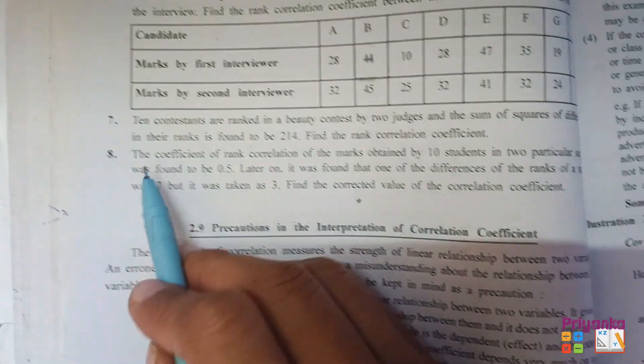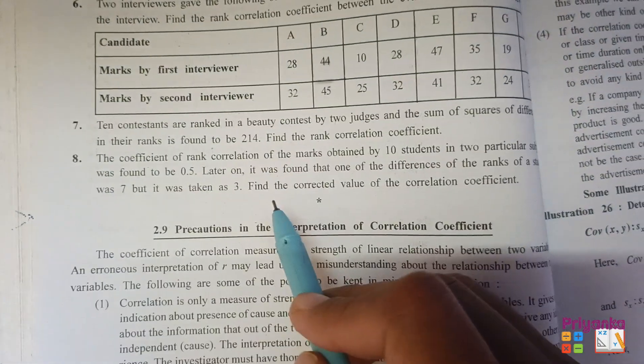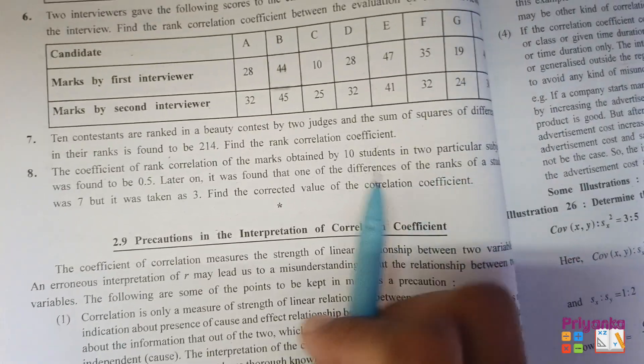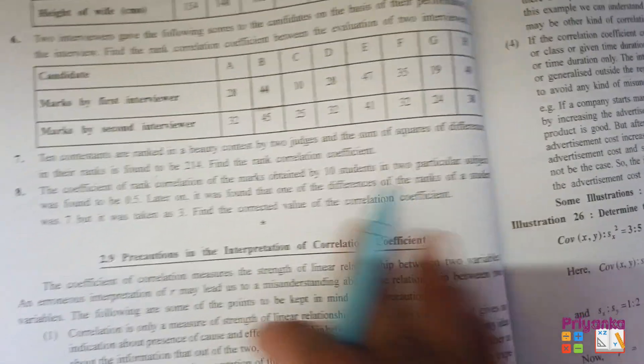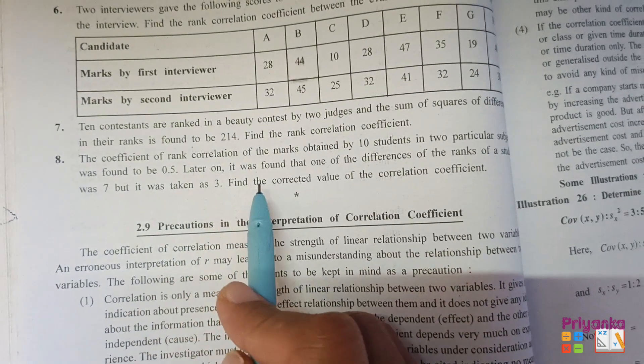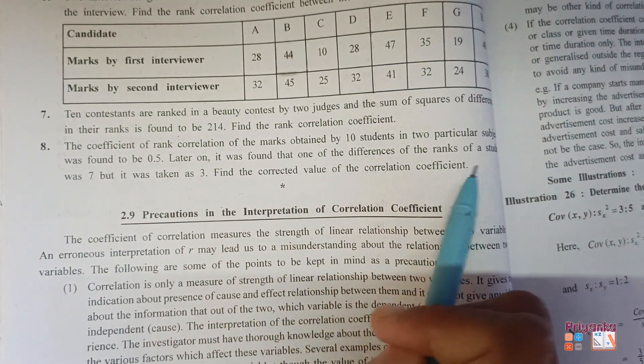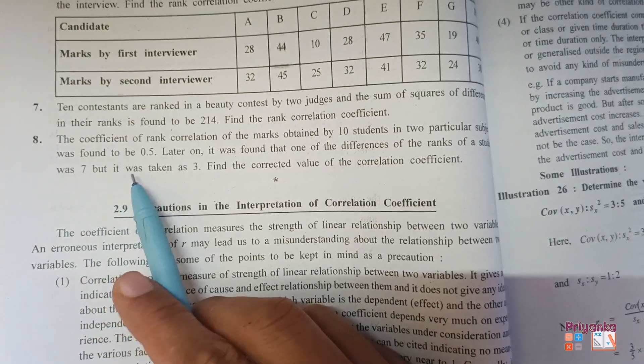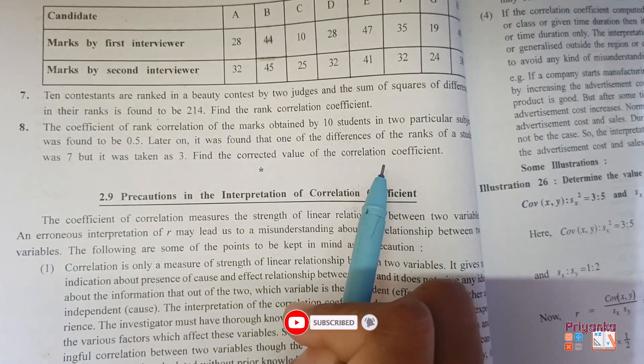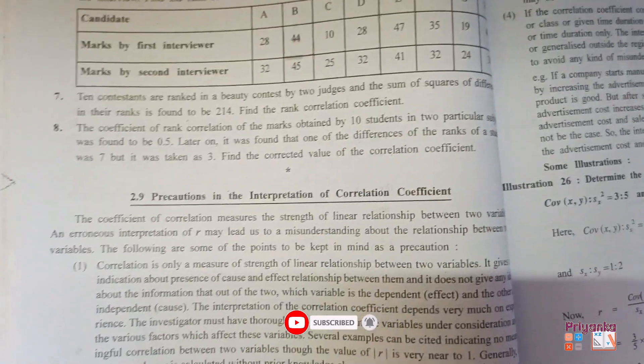Moving to the next, Question number 8. The coefficient of rank correlation of the marks obtained by 10 students in two particular subjects was found to be 0.5. Later on it was found that one of the differences of the rank of the students was 7 but it was taken as 3. Find the corrected value of correlation coefficient.